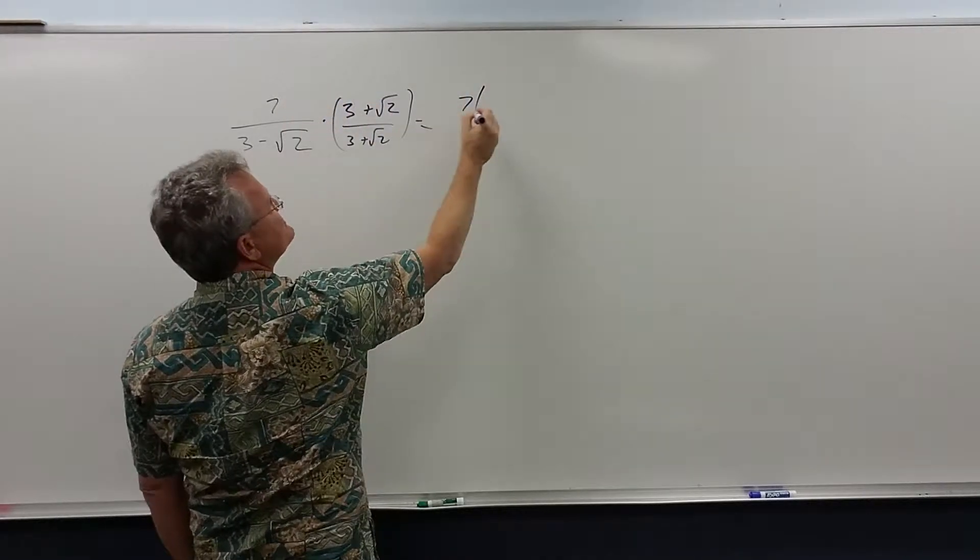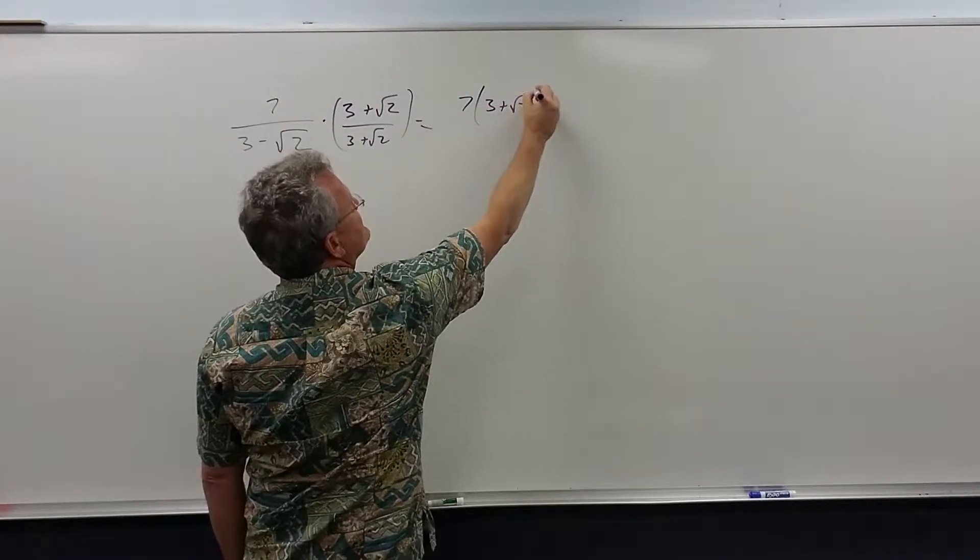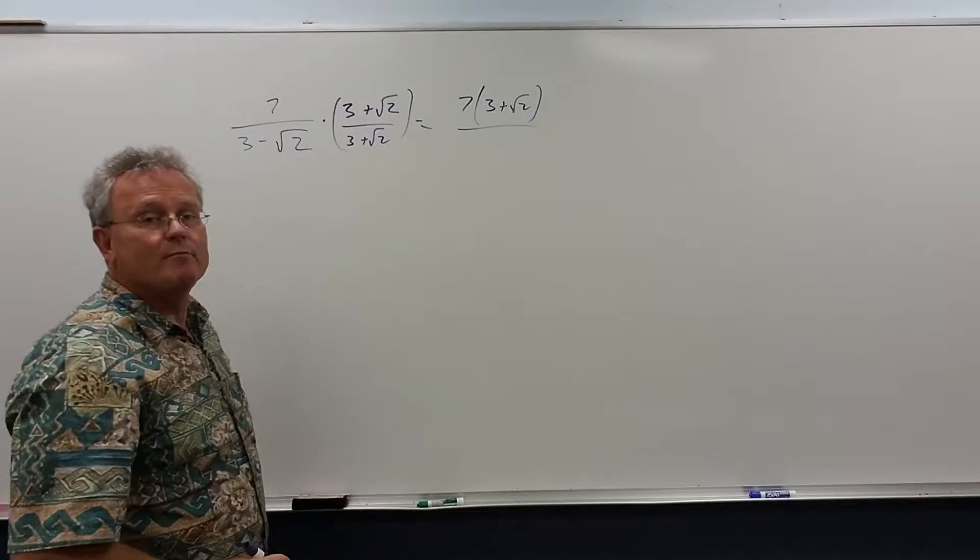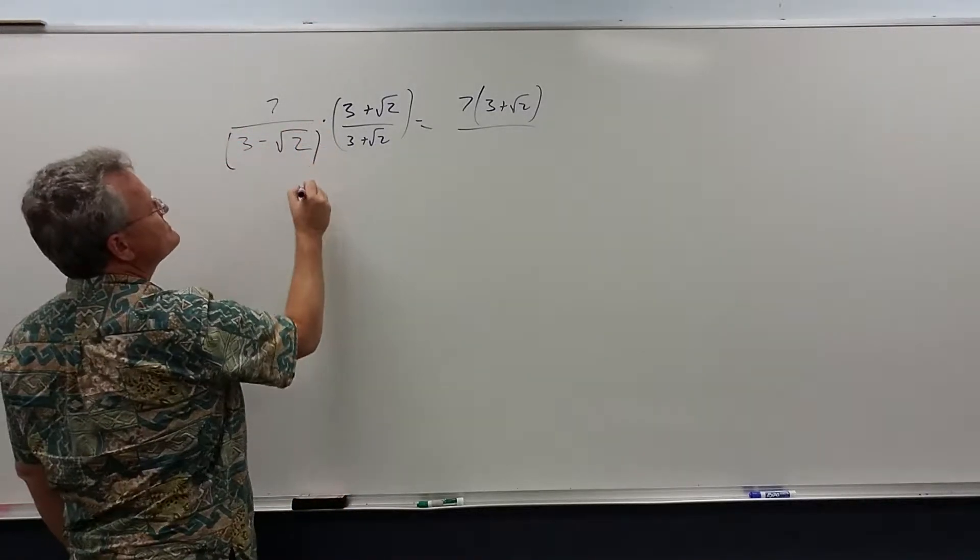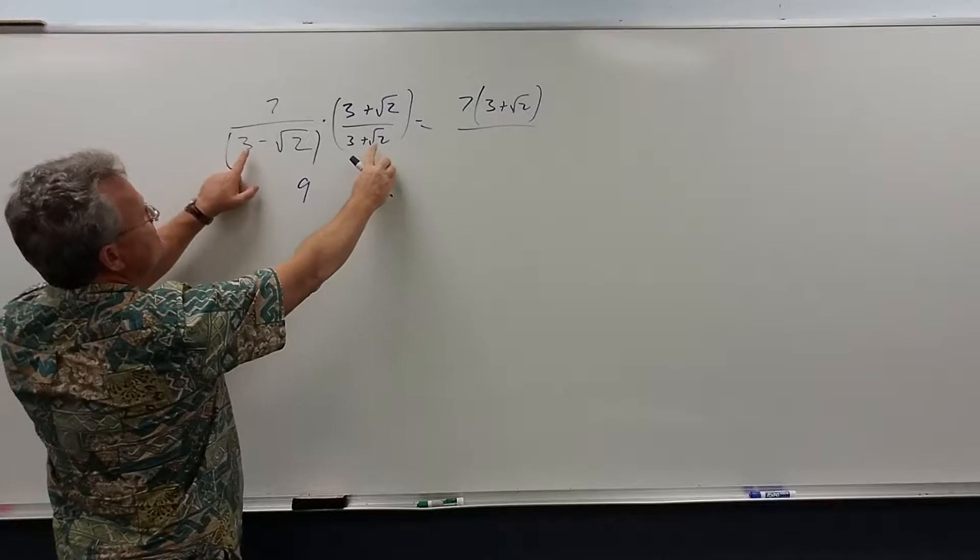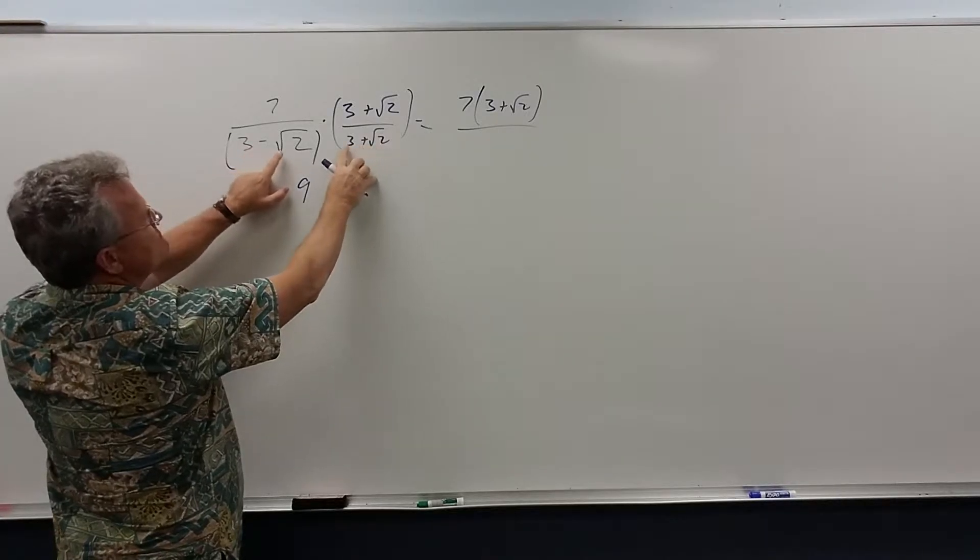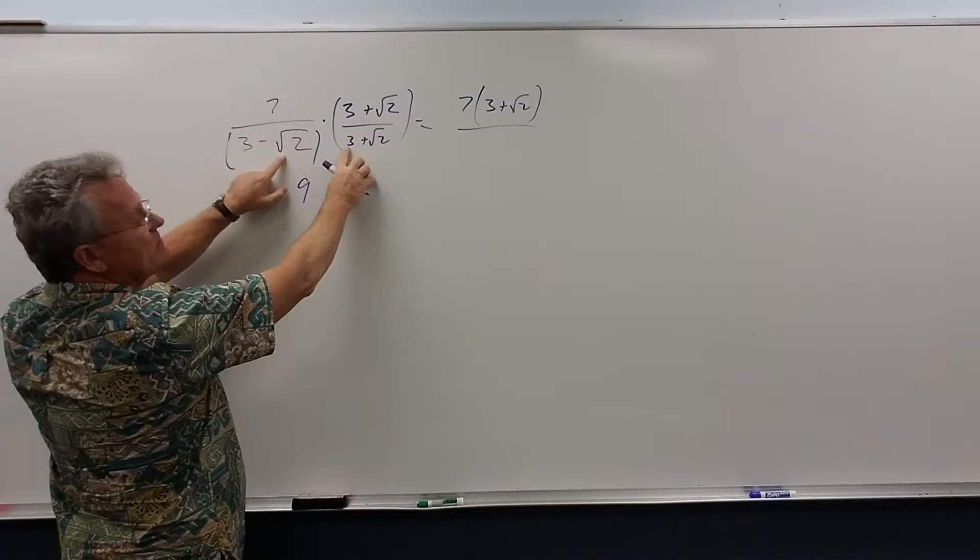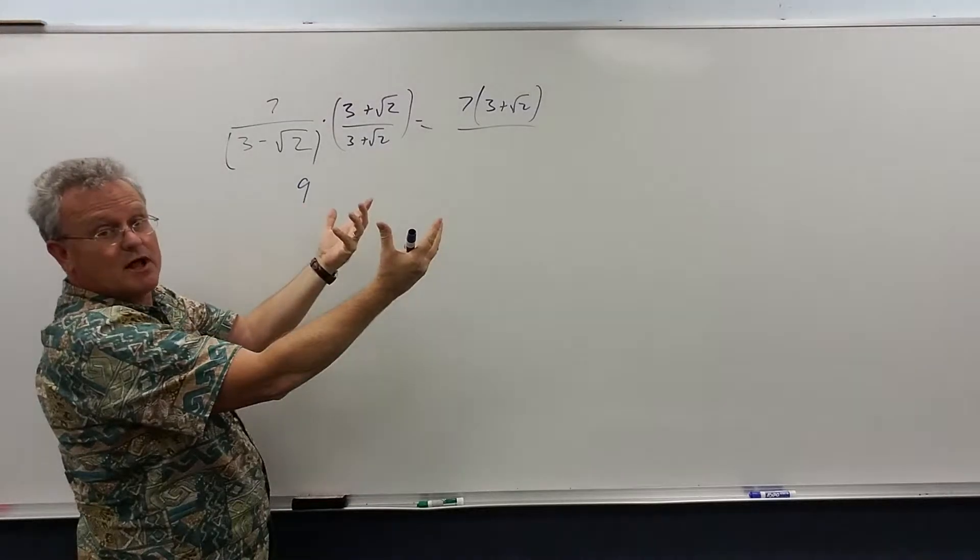And in the denominator when we multiply we get 3 times 3 is 9. 3 root 2 minus 3 root 2 is 0, that's the nature of multiplying by conjugates. The outside and inside terms always add up to 0.